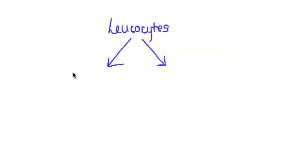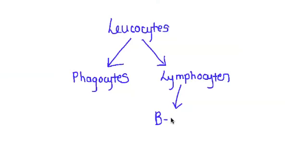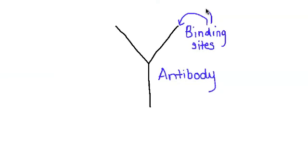Antibodies, on the other hand, are secreted by a specific kind of lymphocyte called a B-cell. Antibodies are Y-shaped protein molecules, and at the ends that we're indicating here, you have two binding sites.